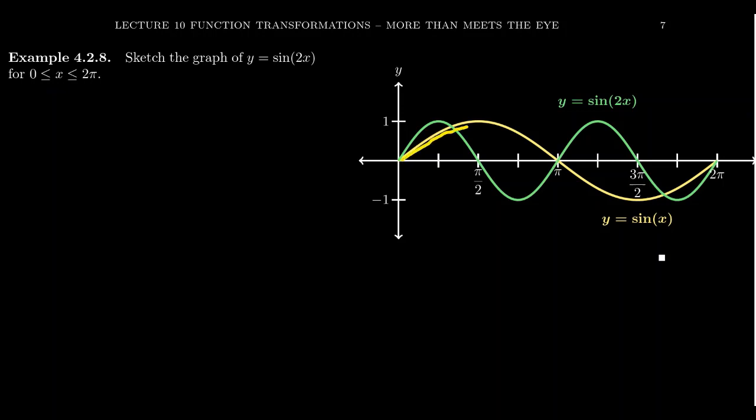So you see illustrated in yellow the standard sine wave. So no modifications have happened whatsoever. So note that at x equals 0, the y-coordinate is 0. At x equals π/2, the y-coordinate is 1. At x equals π, the y-coordinate is 0. At x equals 3π/2, the y-coordinate is negative 1. And at x equals 2π, you get 0 again.